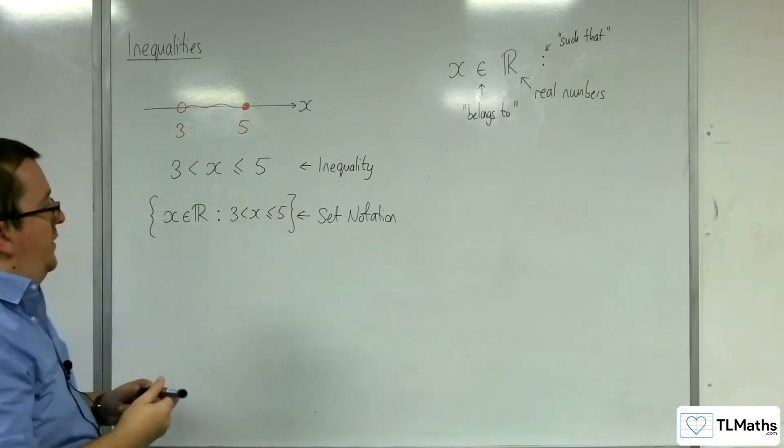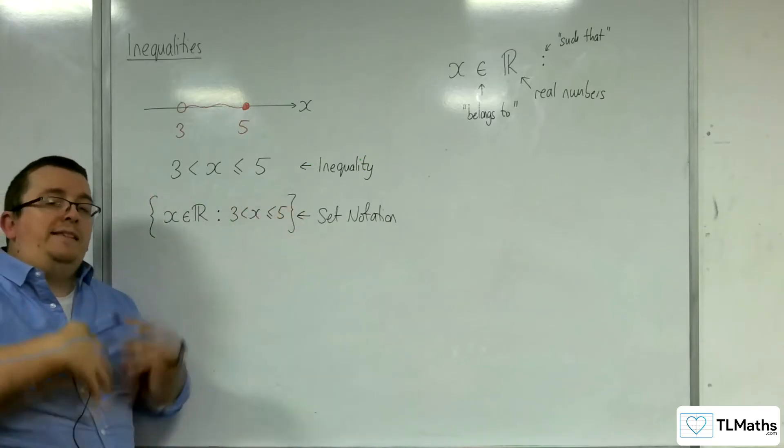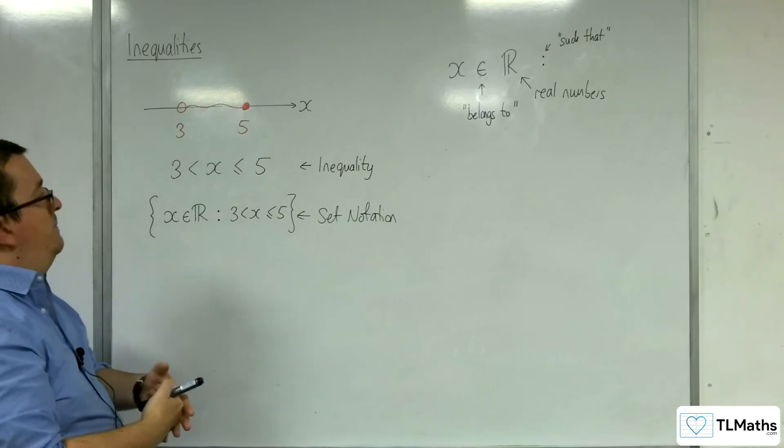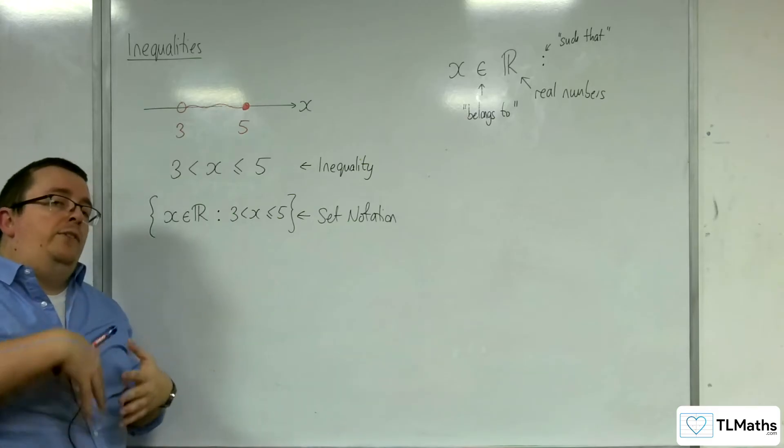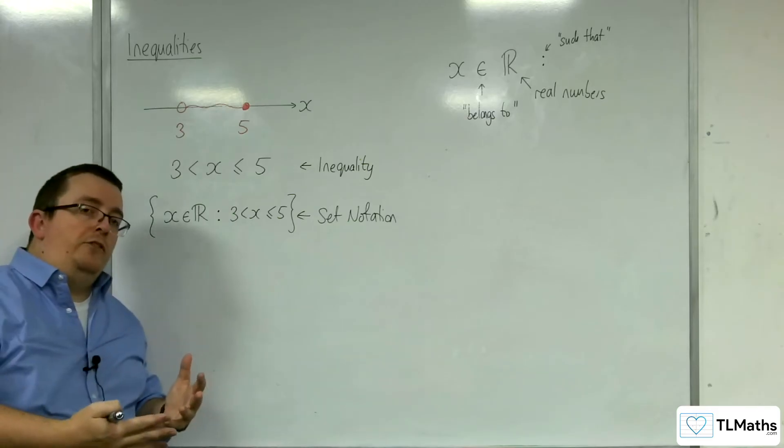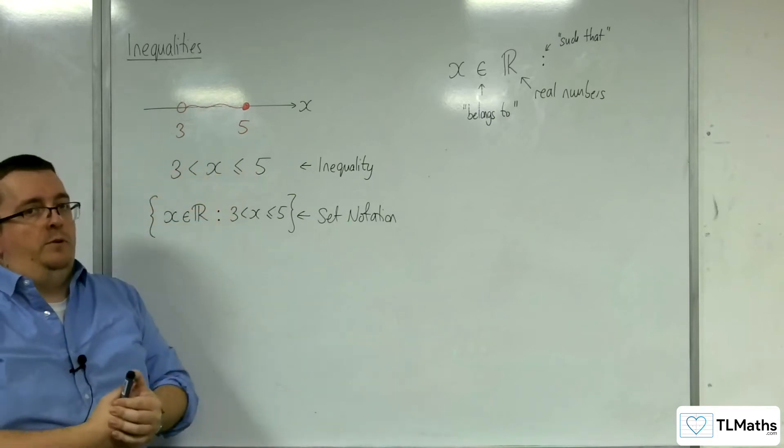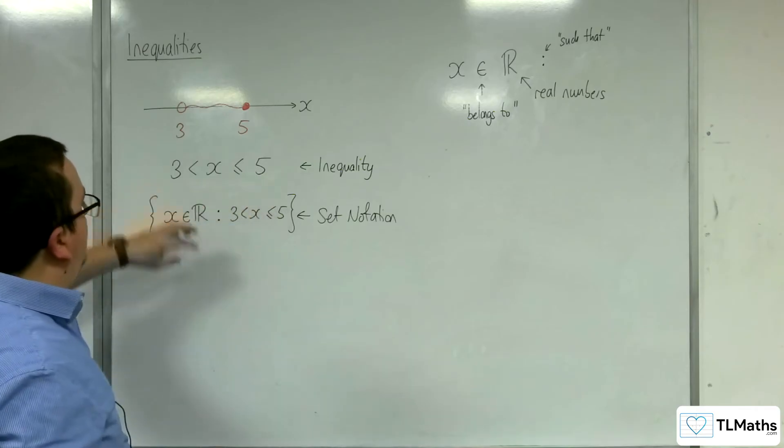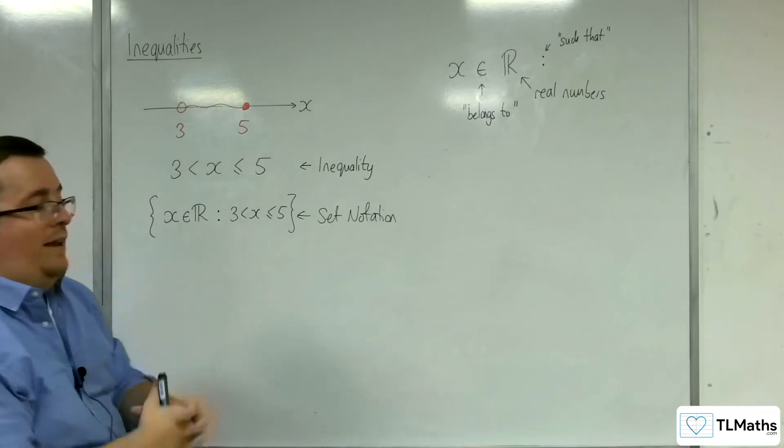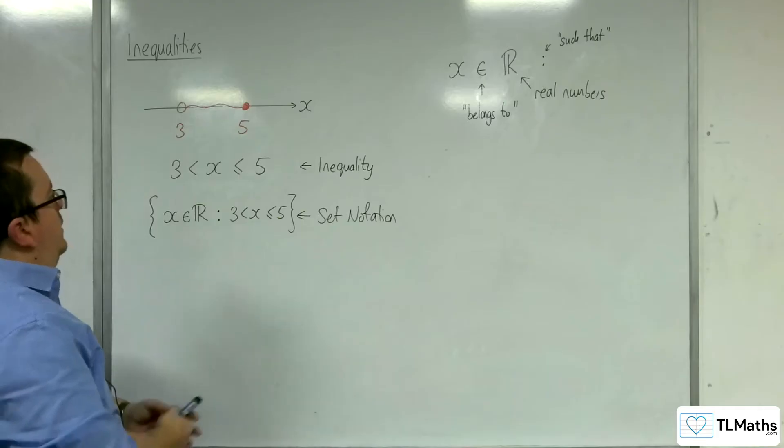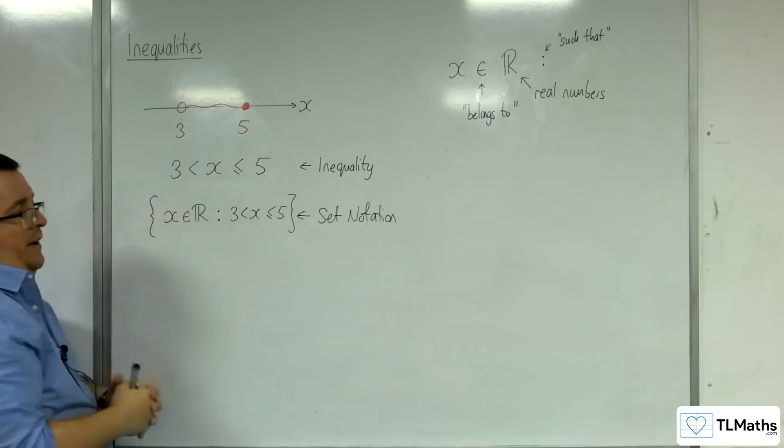You'll look at it for the first time and go, well, why would you include all this extra stuff? It's a more formal way of writing this down. Because if I say that, do you mean that x is a real number? Or is x a natural number, for example? Could it only be a natural number? Are the only values 4 and 5? So this is a little bit loose in its definition. Whereas this is much more explicit, going, it's a real number. It's any number greater than 3, but less than or equal to 5. X belongs to the real numbers such that x is greater than 3, but less than or equal to 5. That's set notation.